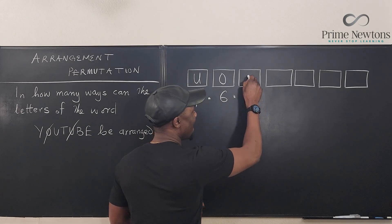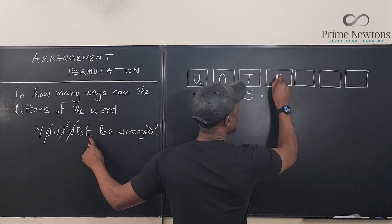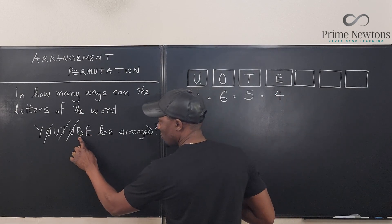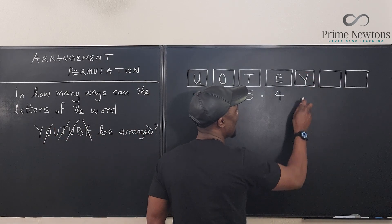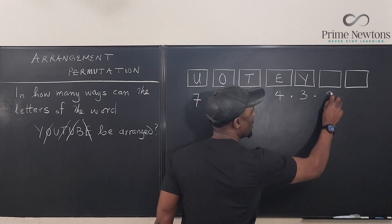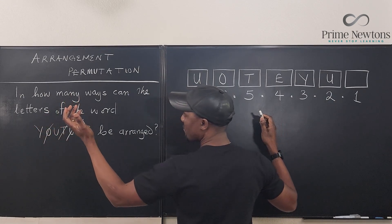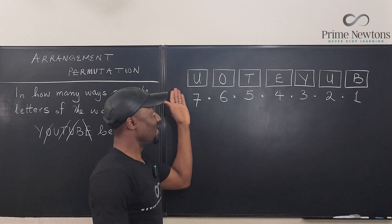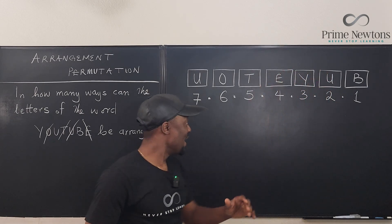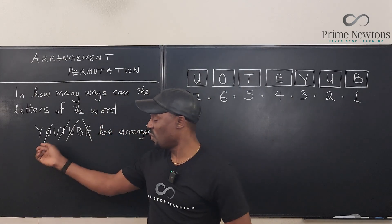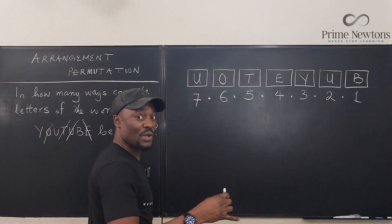Let's assume I picked T — the next one I have four options remaining. Let's assume I picked E, so I had four options. Now I have three options left: B, U, and Y. Let's assume I picked Y next — that was from three options — then two options, and then I have one option. So what letters are left? Let's say this was U, and the last one I haven't used is B. So this is one likely arrangement of the letters of the word YouTube. The letters can be arranged in seven times six times five times four times three times two times one, which is what we call seven factorial.